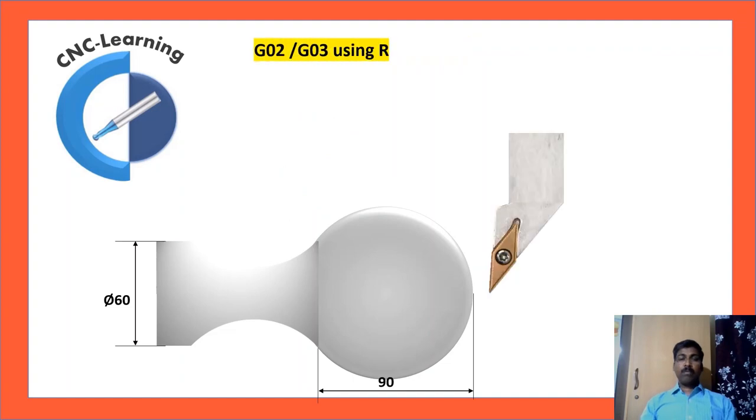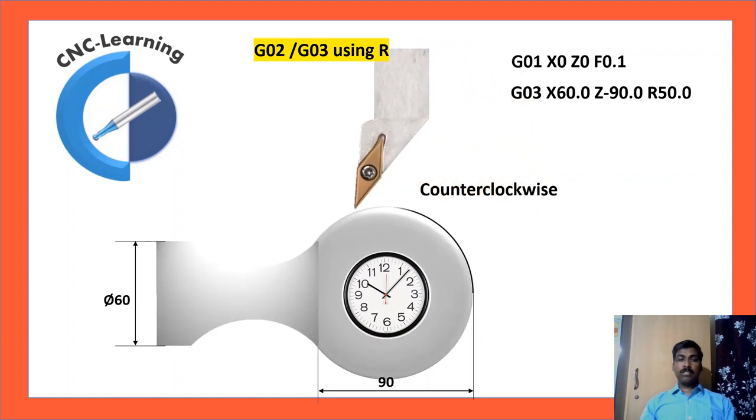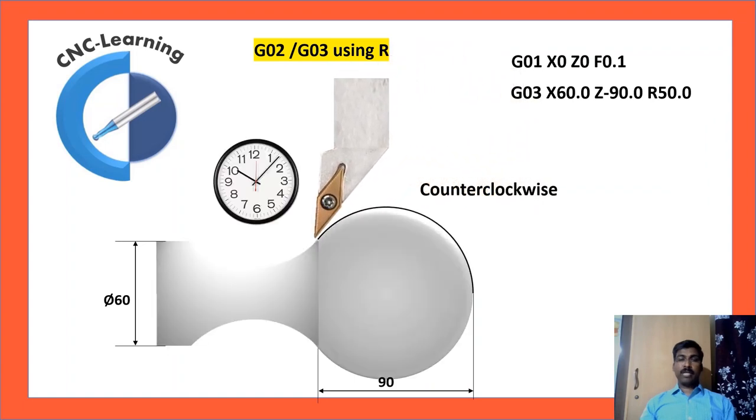We will see one more example. G01, X0, Z0. Then G03, X60, Z minus 90, R50.